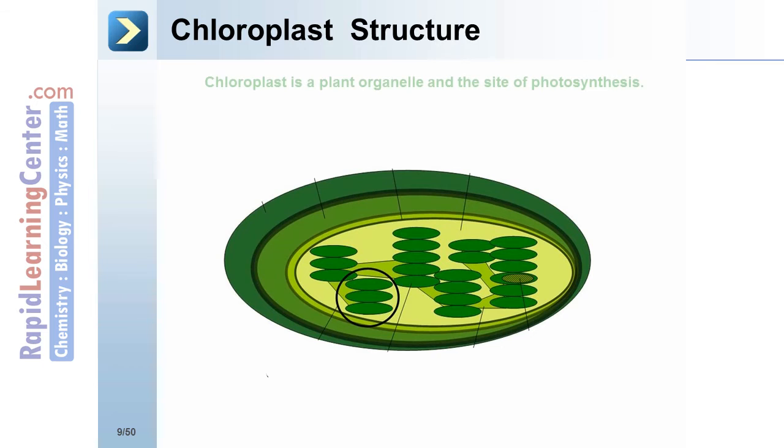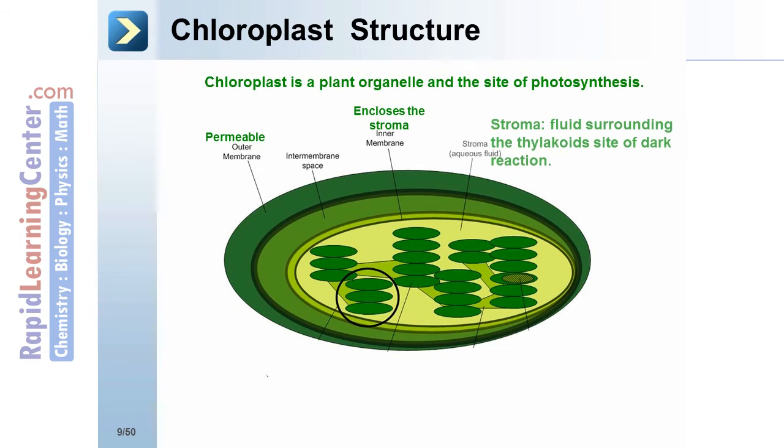Chloroplast structure. Chloroplast is a plant organelle and the site of photosynthesis. It has a permeable outer membrane, an intermembrane space, and encloses the stroma in the inner membrane.